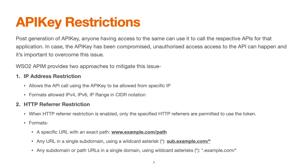WSO2 API Manager provides two approaches to mitigate this issue. While generating the API key, we can enforce two restrictions. First, IP address restriction — the API call can only originate from a particular IP address. Currently it allows IPv4, IPv6, or IP range using CIDR notation. Second is HTTP referral restriction — when enabled, it validates the source of the API request. We can define a particular URL, a subdomain with a wildcard, or any path URL pattern using wildcard strings.